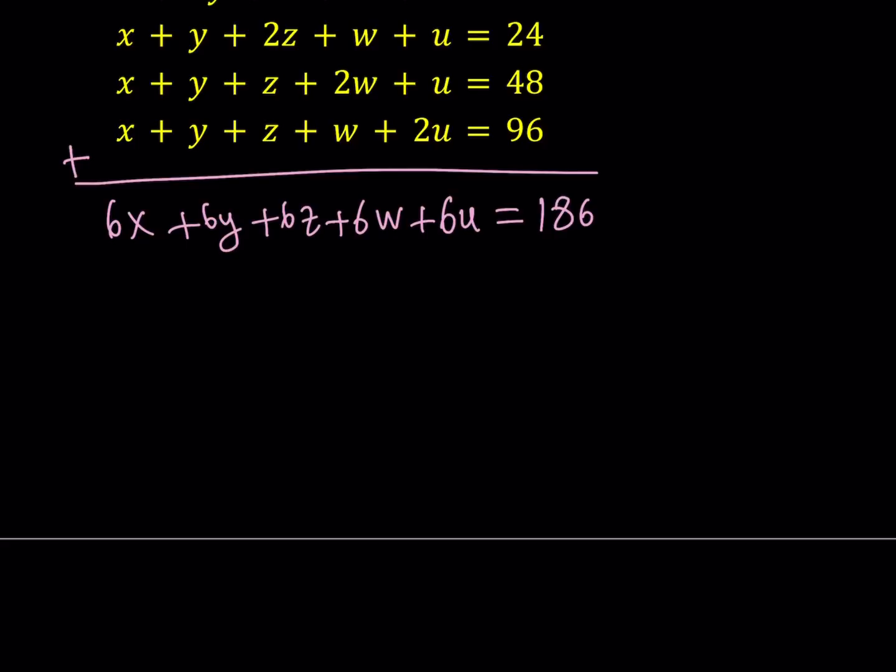And it's divisible by six. Yay, that's cool. So if you divide both sides by six, you get something real cool. X plus Y plus Z plus W plus U. And that is equal to 31. One less than a power of two, but that's not significant.